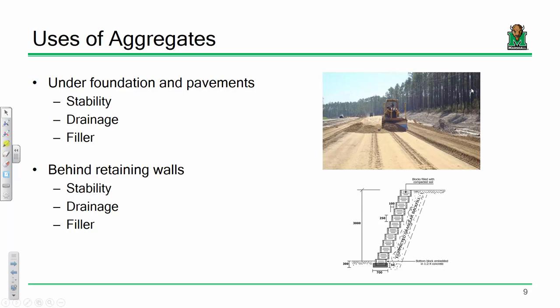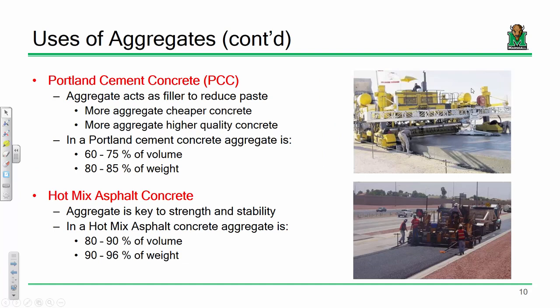Some uses for aggregates: they tend to provide a basis for pavements and foundations, providing stability. They can also serve as filler or drainage elements. For instance, with a bridge abutment, there's usually some aggregate deposited between the back wall and the end of the road. Same thing with retaining walls — they provide an element of drainage and stability. But two really important uses are as ingredients in elements like concrete or asphalt.